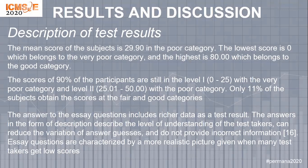The second result is the description of test result analysis. In this research, score categories are defined in four levels: level 1, 0 to 25, very poor; level 2, 25.01 to 50, poor; level 3, 50.01 to 75, fair; and level 4, 75.01 to 100, good. The mean score of 29.01 falls in the poor category. The lowest score is 0, which belongs to the very poor category, and the highest is 80, which belongs to the good category. The data also illustrates that there are still many research subjects whose answers have not reached the fair category, which is below 50.01.